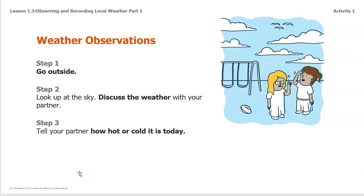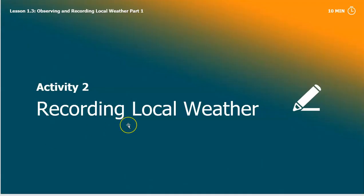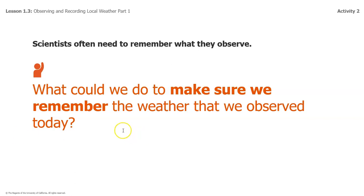So, we made observations. Now, when scientists make observations, they record their observations. So what does it mean to record? Well, to record can be just to take a piece of paper and write down the observations. You know why they write down the observations? So that they don't forget. So the next time they make another observation, they can compare. Remember how I asked you before how the weather was different from last time? That's how you compare. So now we're going to go into recording local weather.